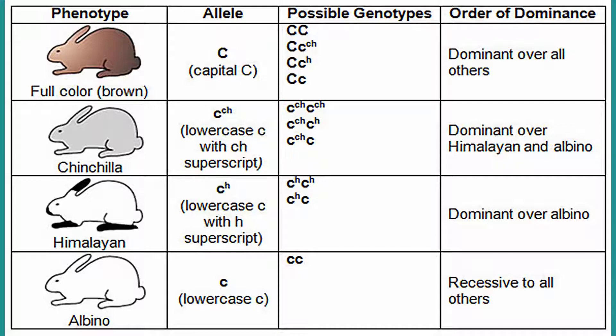In agouti rabbits, there are four possible genotype combinations since agouti is dominant over all other fur colors. Chinchilla has three possible genotype combinations since the chinchilla rabbit is dominant over himalayan and albino. Himalayan has only two possible genotype combinations because it is only dominant over albino. Lastly, albino rabbits have only one possible genotype because it is recessive to all other rabbit fur colors.